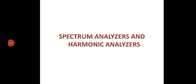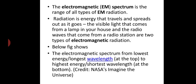Welcome to this class. In this class we study about spectrum analyzers and harmonic analyzers. The electromagnetic spectrum is the range of all types of electromagnetic radiations. Radiation is the energy that travels and spreads out as it goes. For example, visible light and radio frequency are radiations — the visible light from a lamp and radio waves from a radio station are two types of electromagnetic radiations.